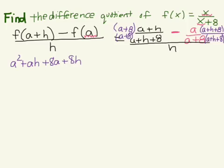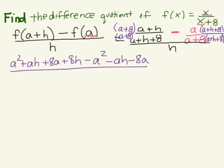Then we're going to distribute our negative a to all of those terms. So we have negative a times a, which gives us negative a squared; negative a times h, which gives us negative ah; and negative a times 8, which gives us negative 8a. All of that is over our denominator of a plus 8 times a plus h plus 8.